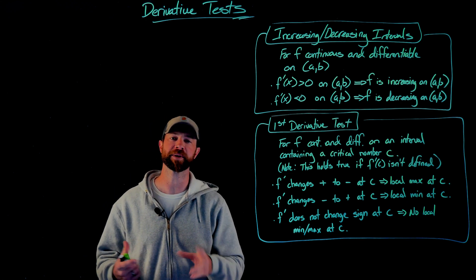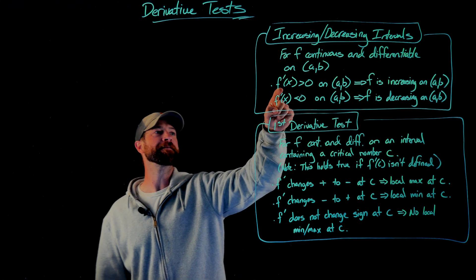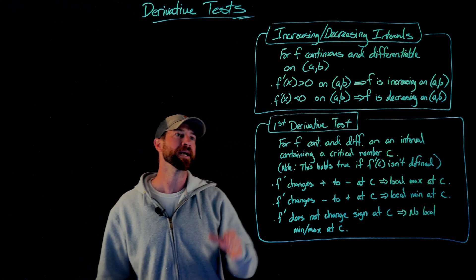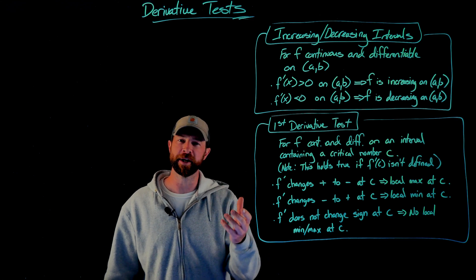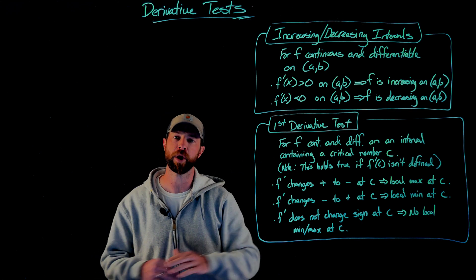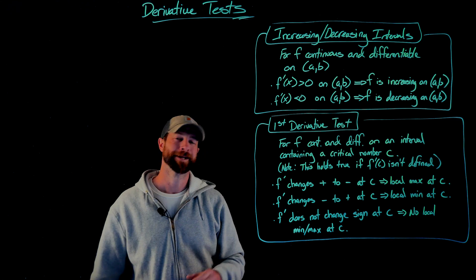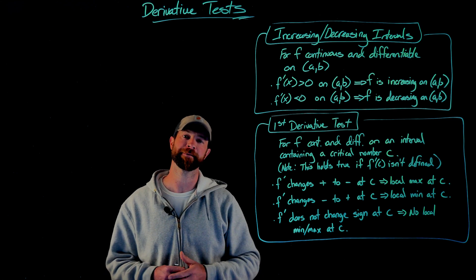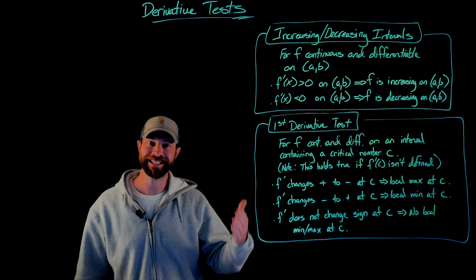Let's first talk about intervals of increasing or decreasing. We need to assume that f is continuous and differentiable on this interval. If our first derivative is positive on the interval (a, b), then we say f is increasing on that interval. If our derivative is negative, we say it's decreasing on that interval. If we remember the concept of a derivative telling us the slope of a function, this should make sense: for positive slopes, or when our derivative is greater than zero, we're an increasing function or sloping up. When our function has a negative slope, our values are going down from left to right. In the examples, we're going to take the first derivative and then determine where the sign changes happen for our derivative.